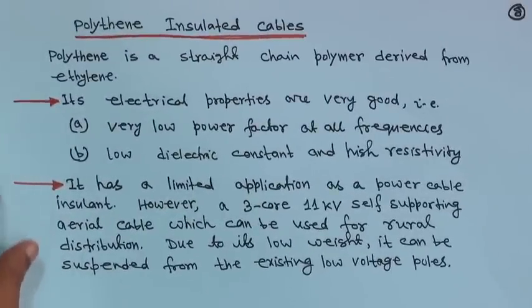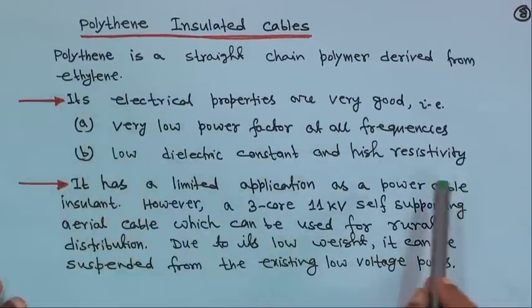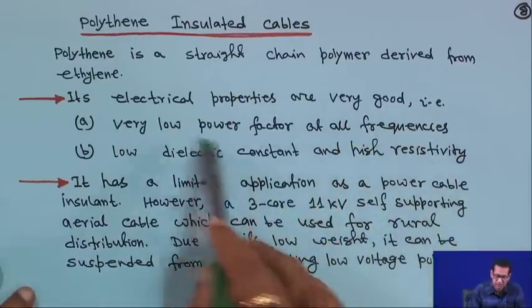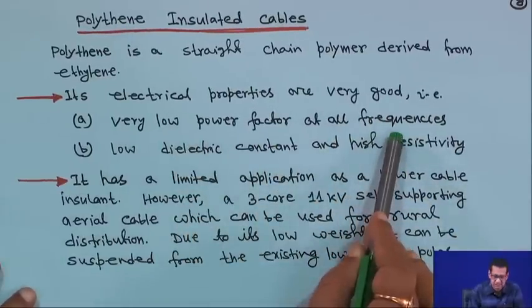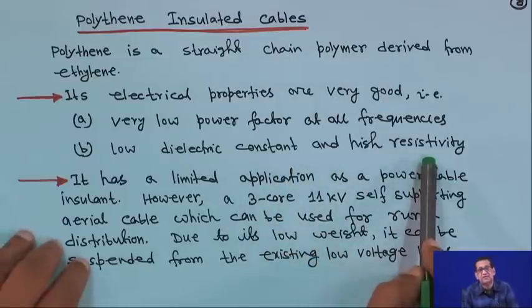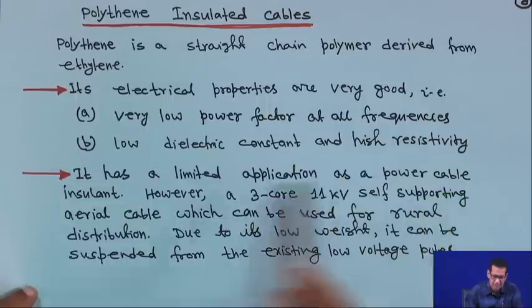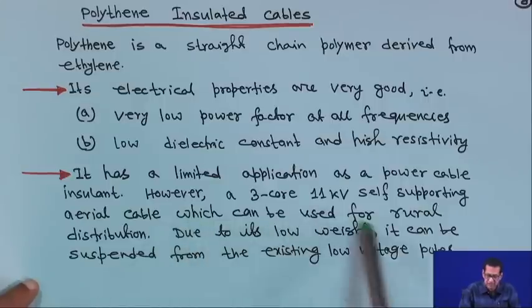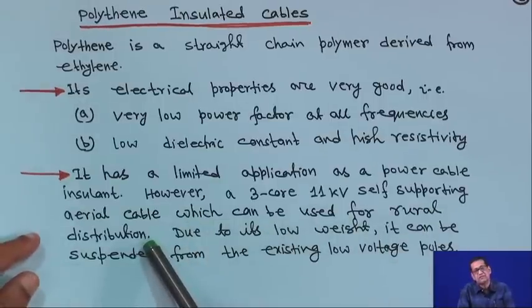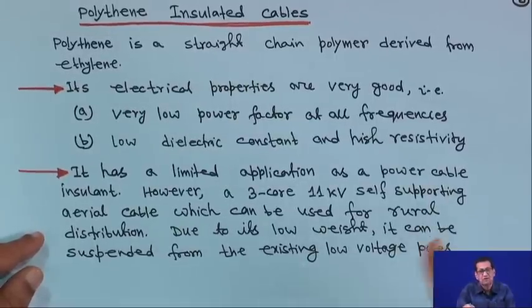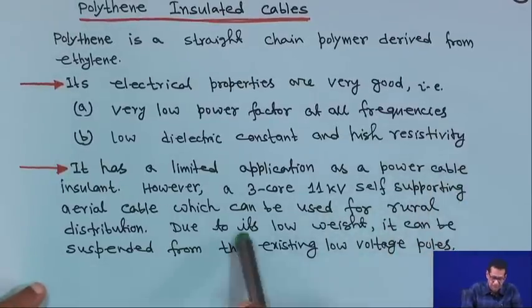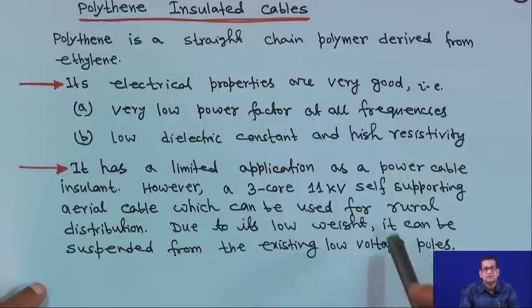Polythene insulated cables — polythene is a straight chain polymer derived from ethylene. Its electrical properties are very good: very low power factor at all frequencies, low dielectric constant, and high resistivity. It has a limited application as a power cable insulator. However, a 3-core 11 kV self-supporting aerial cable can be used for rural distribution. Due to its low weight, it can be suspended from existing low voltage poles.